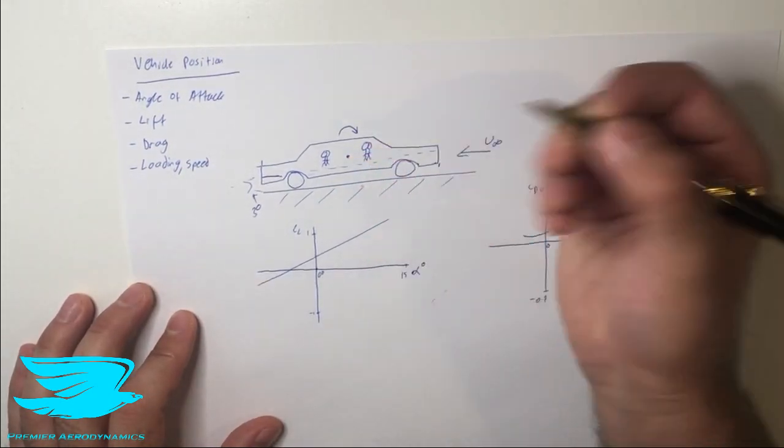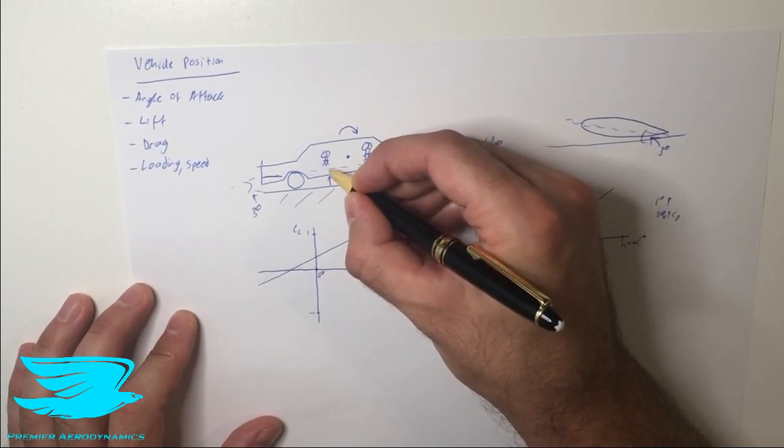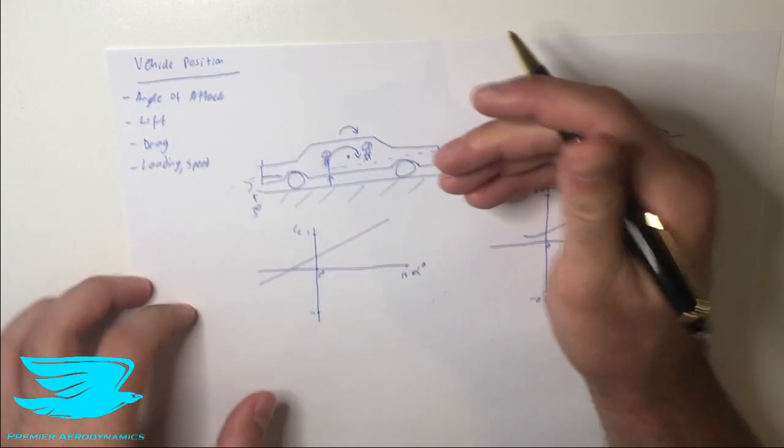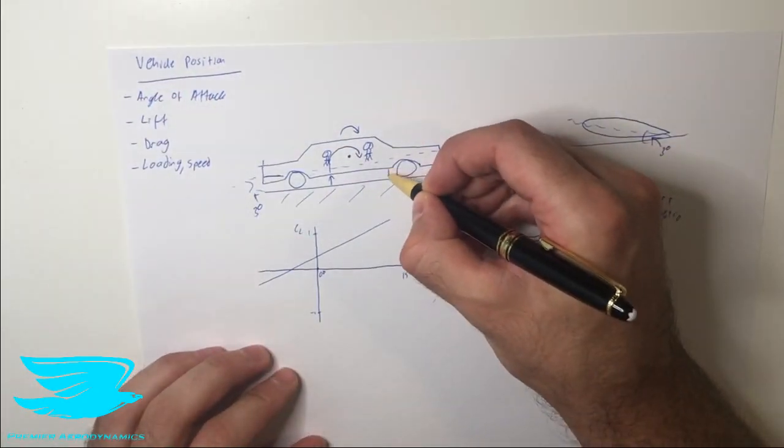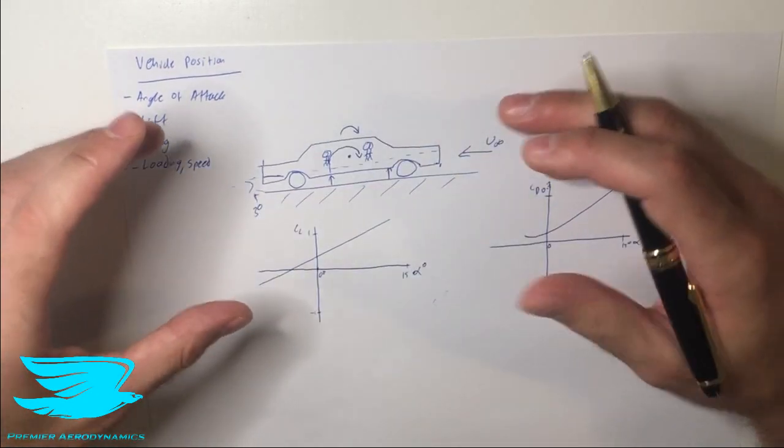Now where the car produces the lift compared to where it will rotate about is very important. So if the car rotates about this point here and we produce the majority of the lift here, we can see now this is producing a clockwise moment. So the car is actually going to want to pitch down.